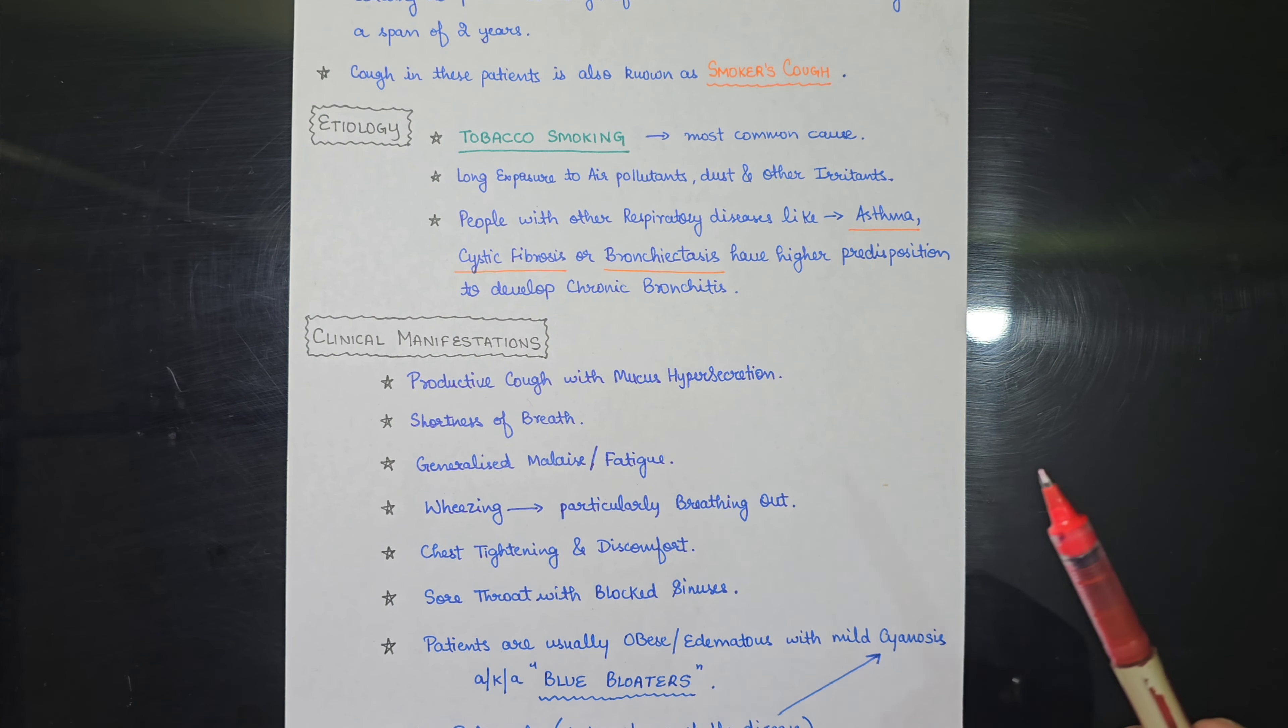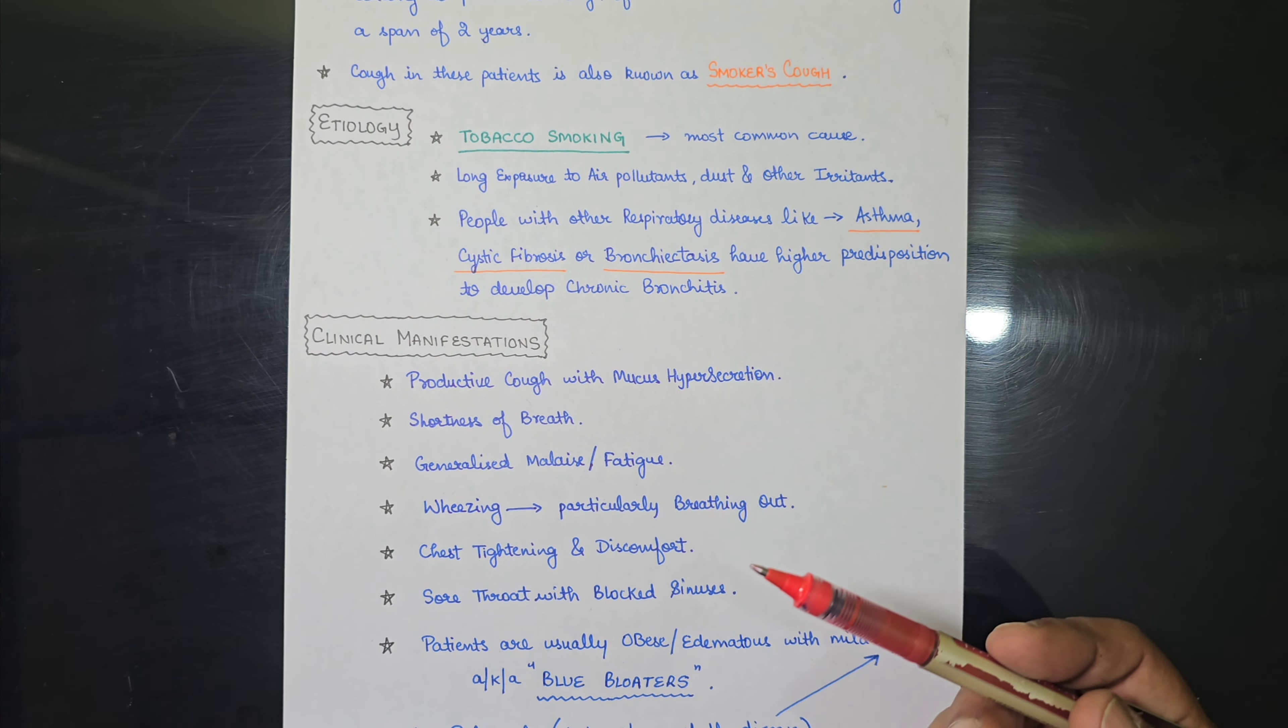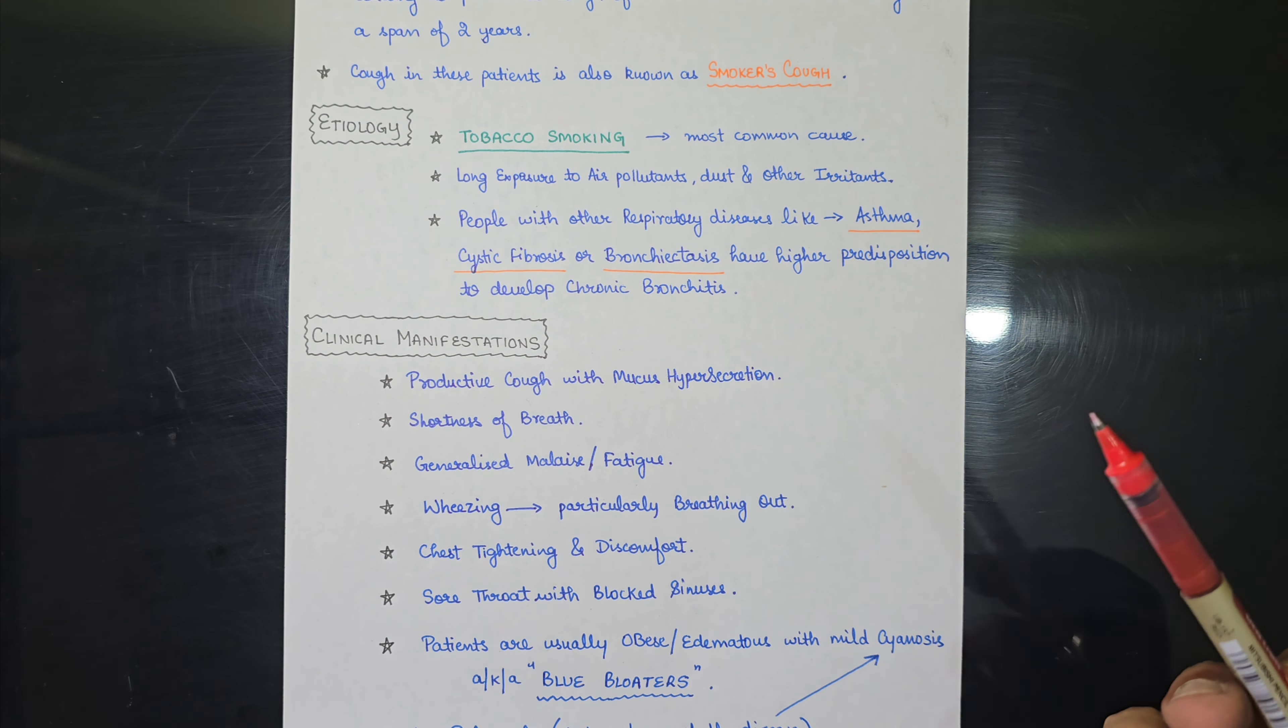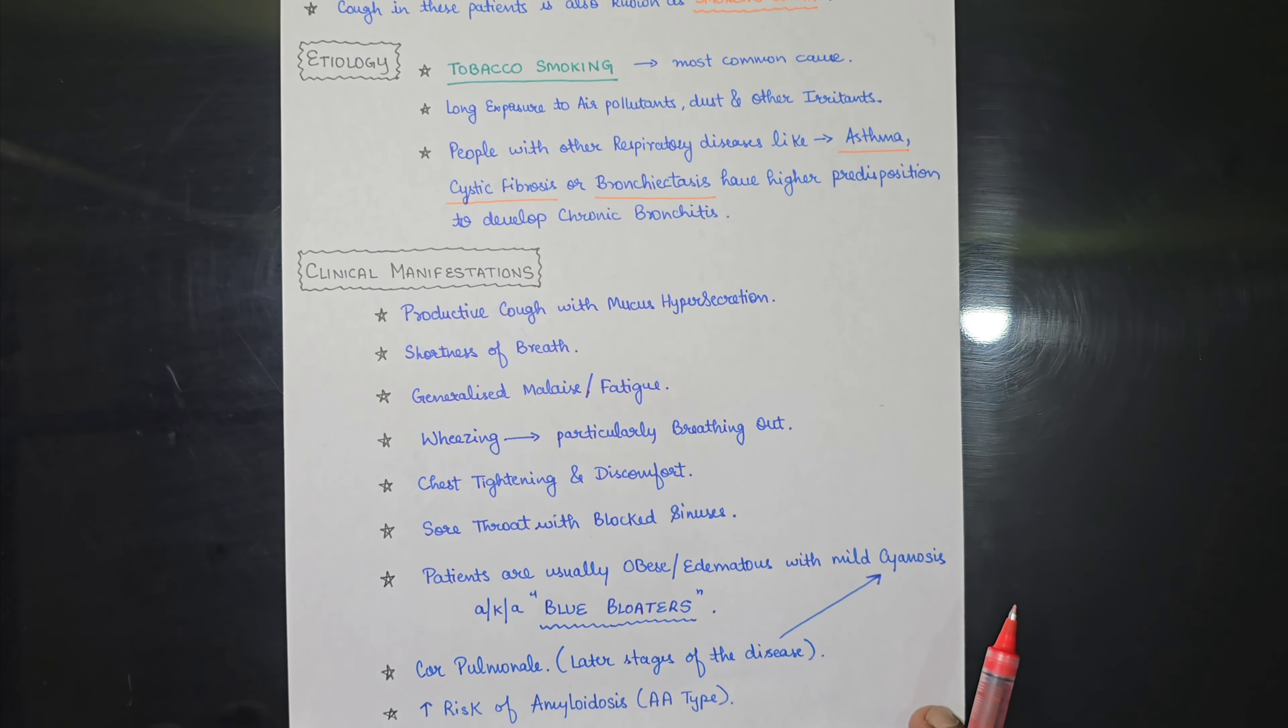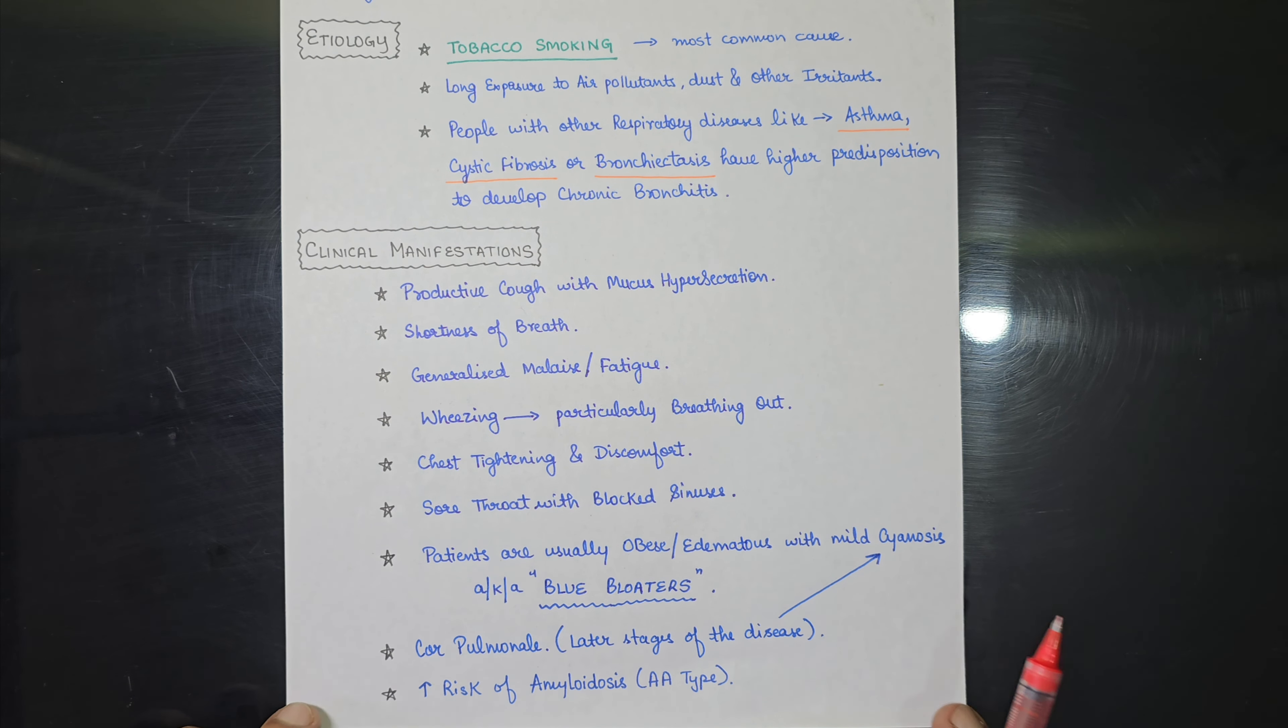Another is generalized malaise and fatigue and wheezing. Wheezing in these patients is particularly breathing out. Chest tightening and discomfort, sore throat with blocked sinuses, and patients are usually obese. In these patients, the patient of chronic bronchitis are usually obese and edematous with some sort of mild cyanosis also. So they are also known as blue bloaters.